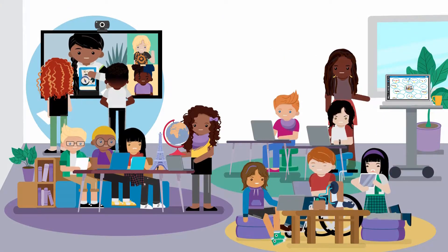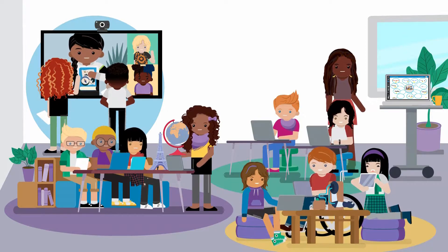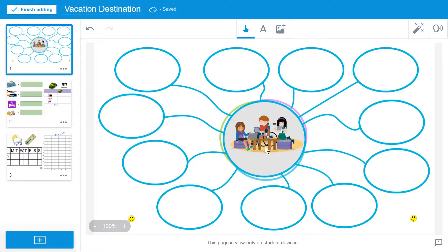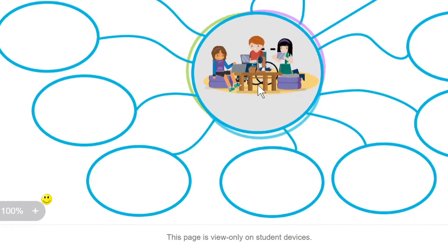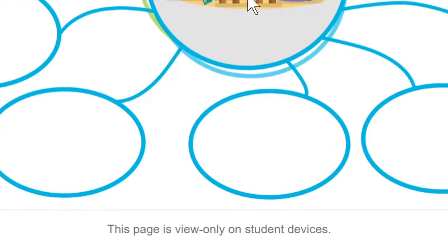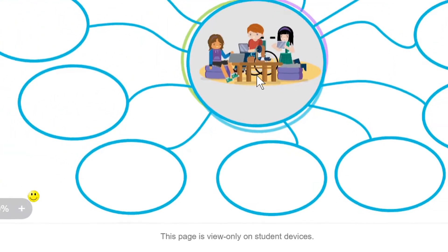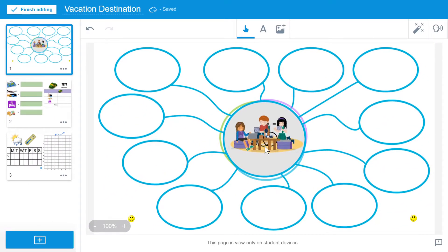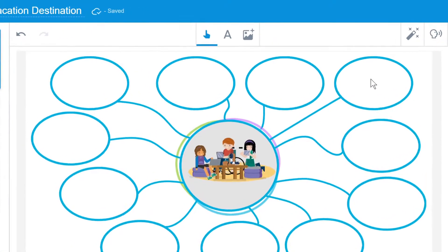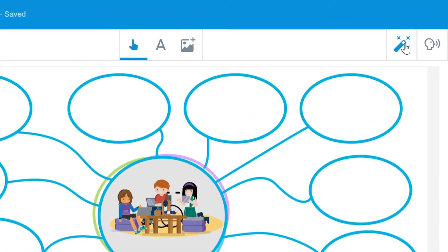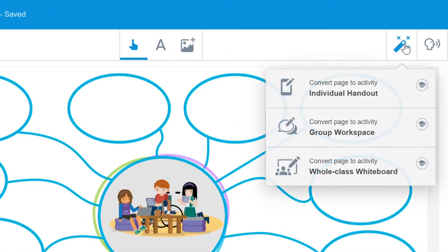Today, I'm going to use a ready-made graphic organizer to conduct a whole-class icebreaker activity. I will begin in lesson edit mode. Note that by default, this page is set to view only on student devices. To convert this page, I will select the Convert to Activity button, and then Convert Page to Activity Whole Class Whiteboard.